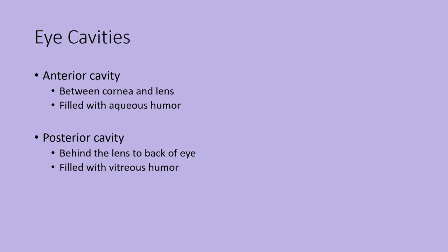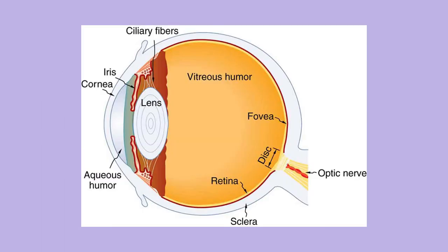The eye has two basic cavities. The anterior cavity, in front between the cornea and the lens, is filled with aqueous humor that is recycled. The posterior cavity, behind the lens all the way to the back, is filled with vitreous humor, which is not replaced. As you age or with certain conditions like diabetes, the pressure of the vitreous humor can be measured as certain diseases can affect it.